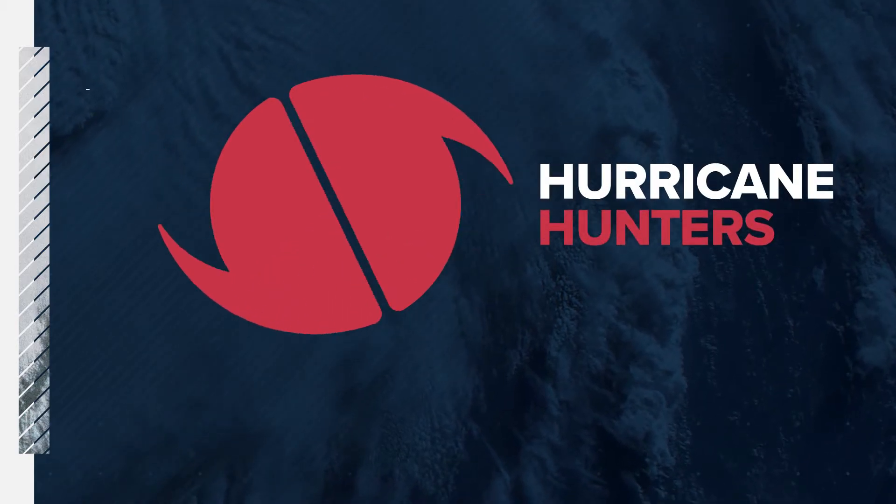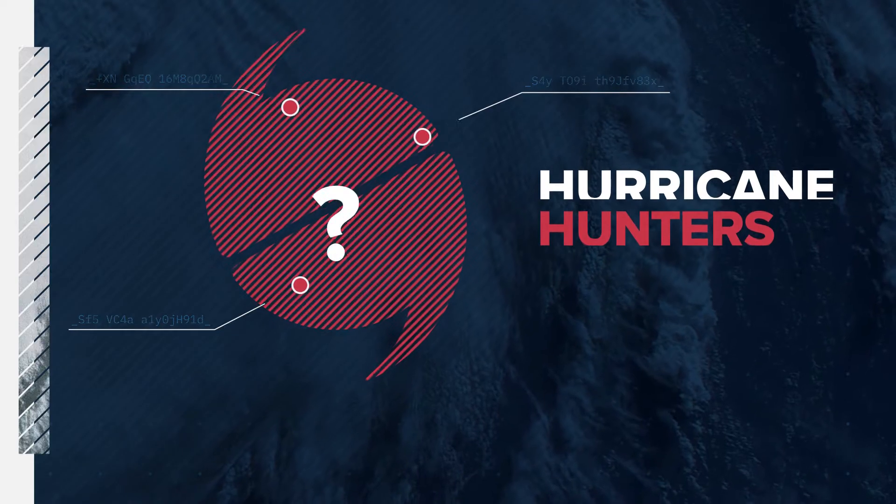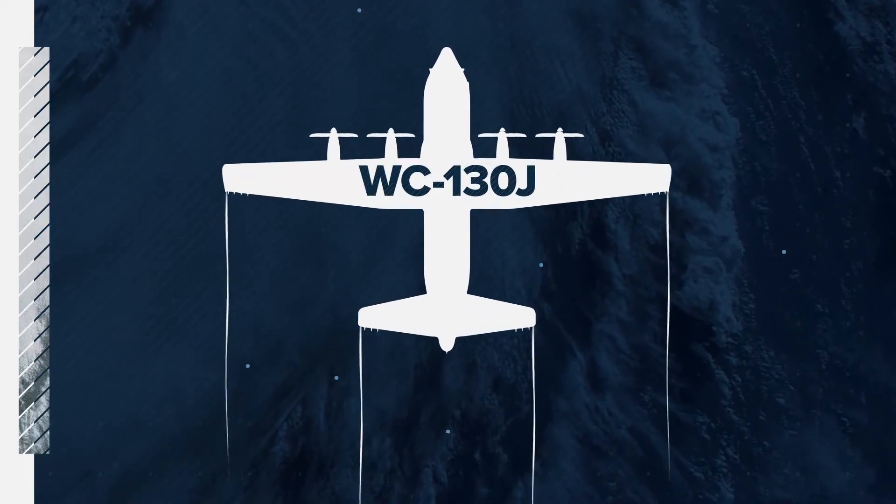Hurricane hunters provide a lot of information about a storm, but how are they even getting inside? They're flying a plane called a WC-130J, like this one.